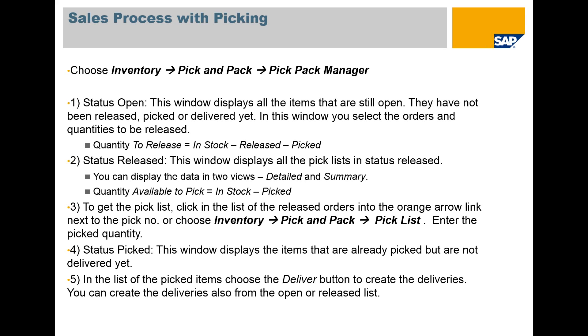You can display the data in two views: detailed or summary. The quantity available to pick is equal to the in-stock minus what's already been picked.